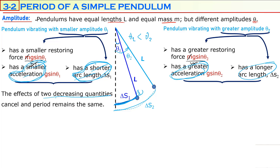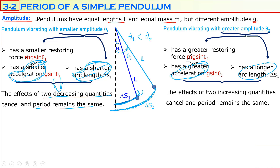The second pendulum has a longer arc length but moves with a greater acceleration, meaning its average speed is greater. For the pendulum vibrating with a smaller amplitude, the effects of the two decreasing quantities — smaller acceleration and shorter arc length — cancel out, and the period remains the same. Similarly, for the pendulum with greater amplitude, the effects of the two increasing quantities also cancel, so the period remains the same.